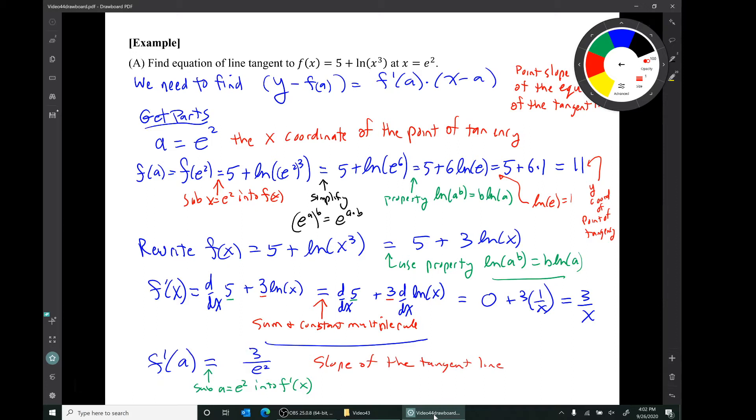So we've got all of our parts. We needed a, f(a), f'(a). We've got a, f(a), and f'(a) computed. Now we're ready to substitute parts into the tangent line formula. We'll do that on the next page.